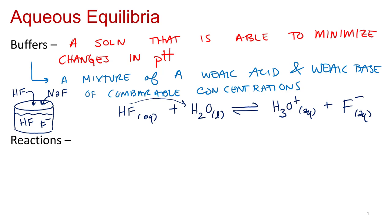We'll talk about that in terms of what we call buffer range. The max you can usually go for buffers and still have a good buffer is 10 times more concentrated one way or the other. So you can have 10 times more acid than base, or 10 times more base than acid. So that's what we mean by comparable - they don't need to be exact, but they need to be at least within that range.